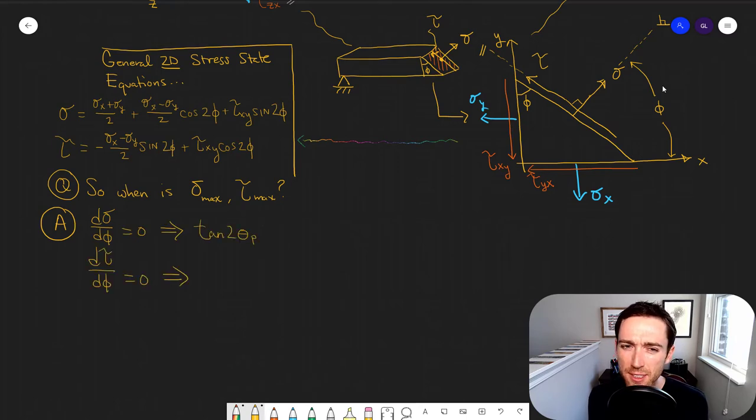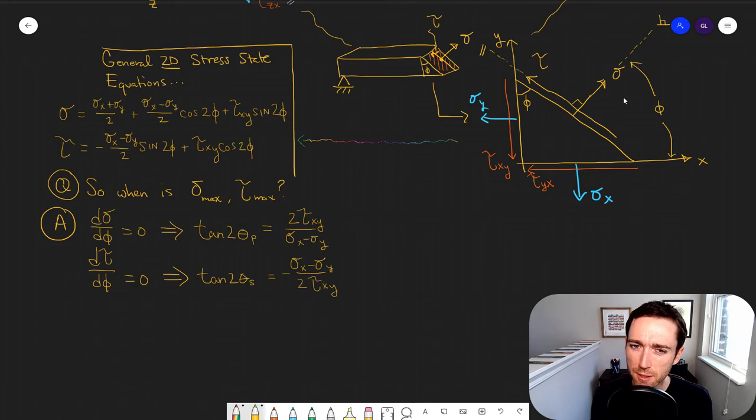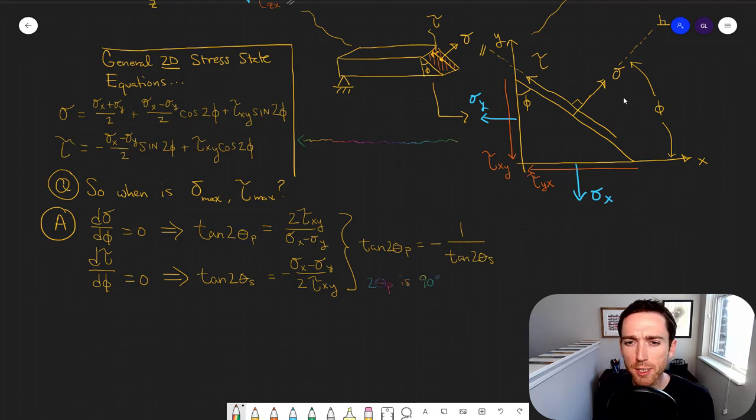We can also use calculus, take the derivative, set it equal to zero, solve the resulting equation for the independent variable to find the maximum and minimum. And so taking the results of the maximum normal stress plane and the maximum shear stress plane, we see that they're exactly plus or minus 45 degrees from one another. No way. We've seen this before.